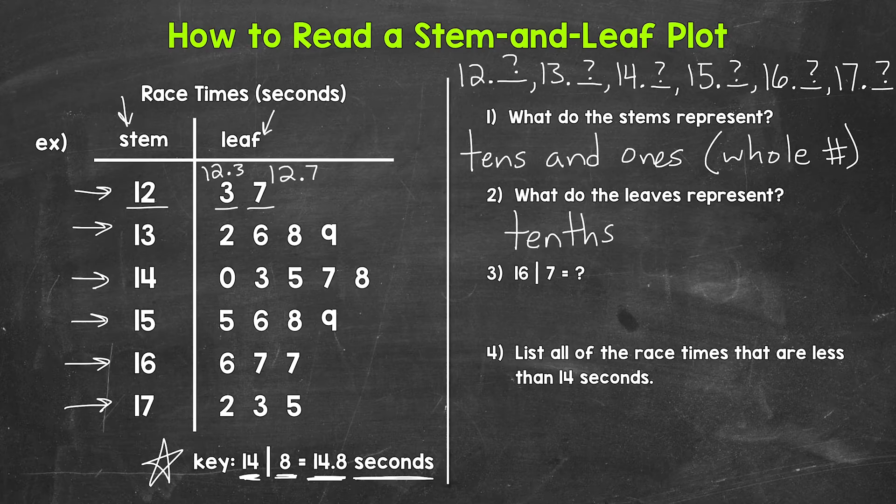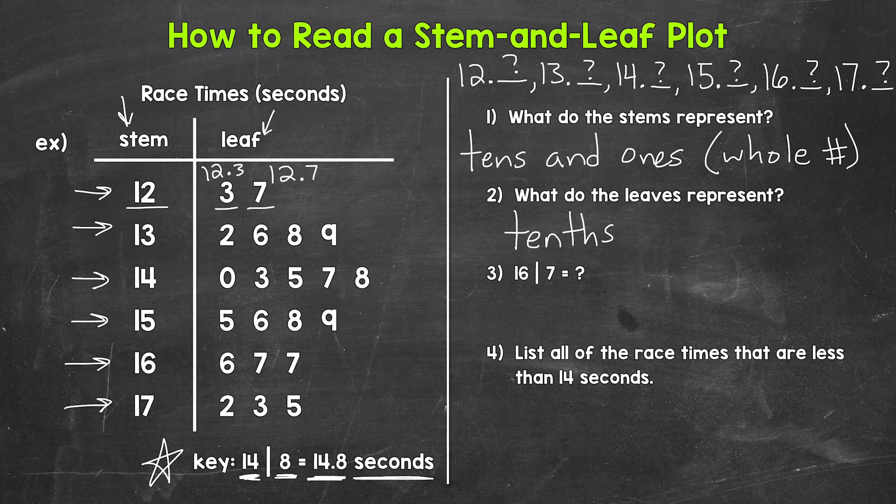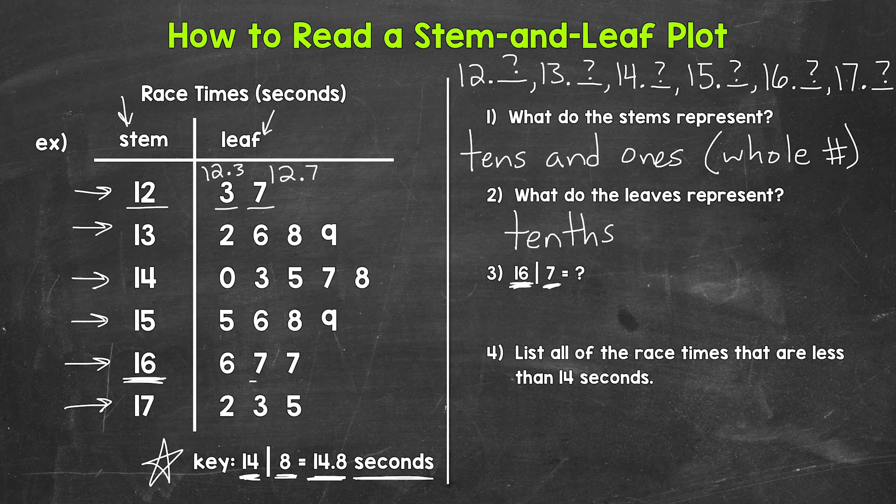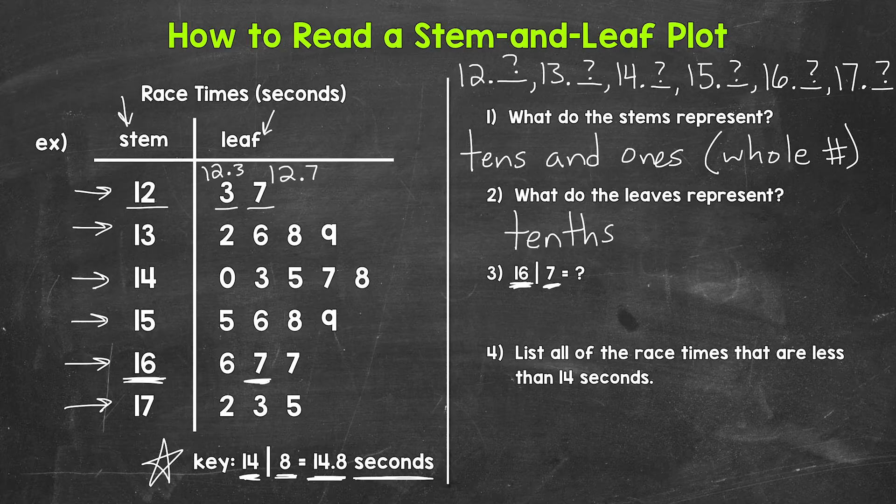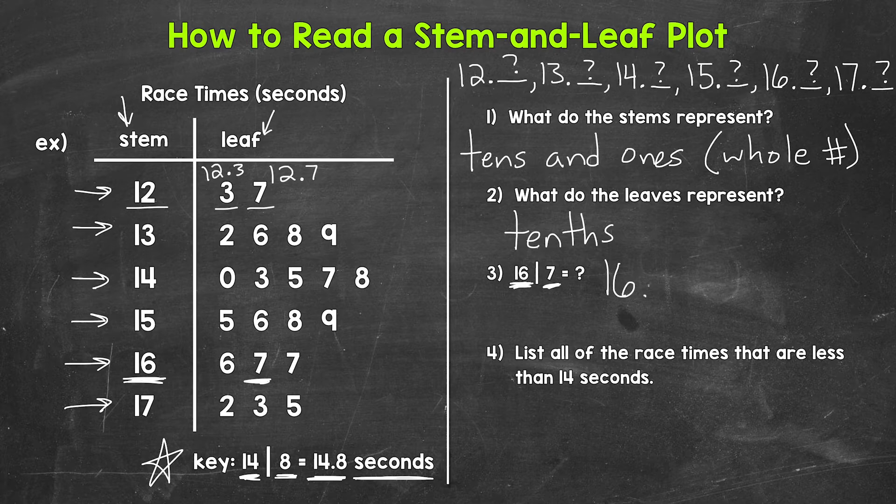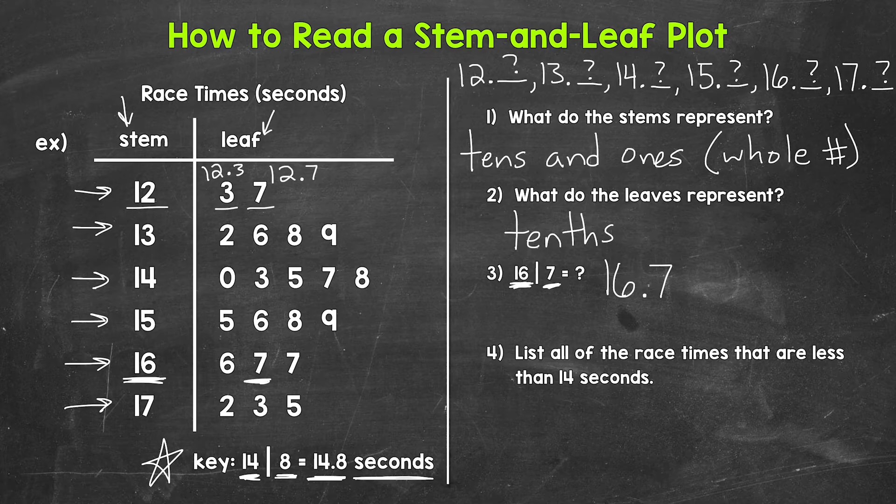Let's move on to number 3 and do another example. So we have a stem of 16 and a leaf of 7. Looking at the stem and leaf plot, stem of 16 and leaf of 7. So let's put that stem together with that leaf. That gives us 16, decimal, 7. So 16 and 7 tenths.